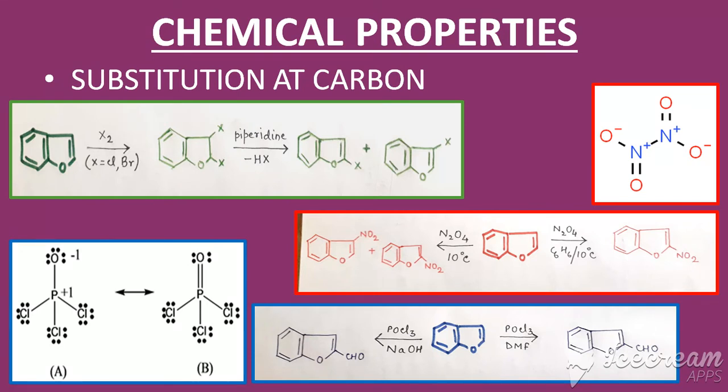For reactions pertaining to substitution at carbon, the first reaction says that on reaction with halogens which are mainly chlorine and bromine, they give good halo substituted products. First step is the bi-cleavage followed by removal of the respective halo acid in the presence of piperidine forming 2-halo benzofuran as the major product.